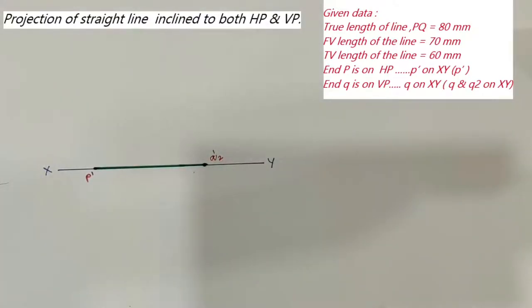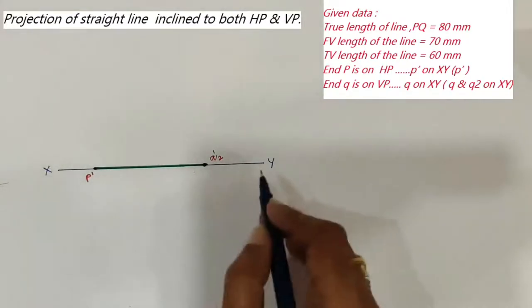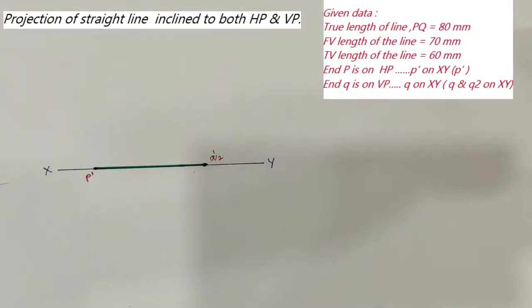In the problem it is mentioned that the other end of the line, Q, is on the VP. So its top view falls on the XY line — the top view of Q falls on the XY line. So this existing XY line becomes the locus line for the Q point.